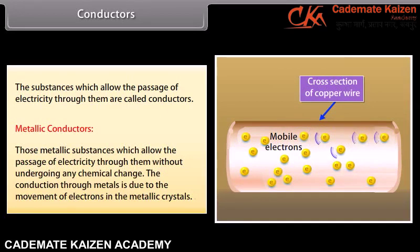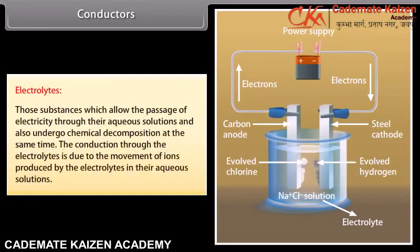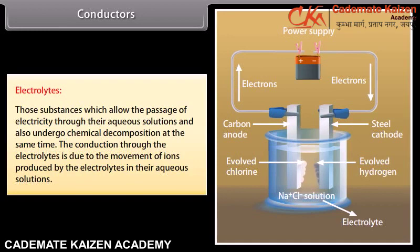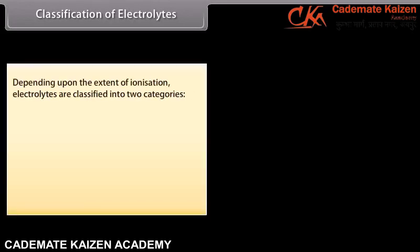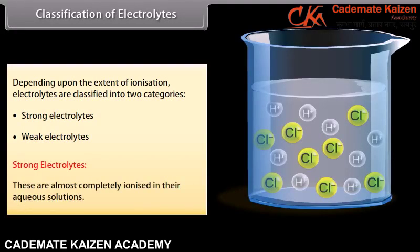Electrochemical cell and Gibbs energy: The reversible work done by a galvanic cell equals the decrease in its Gibbs energy. If the EMF of the cell is E and nF is the amount of charge passed, then ΔrG = −nFE_cell. If the concentration of all reacting species is unity, E_cell = E°_cell and ΔrG = −nFE°_cell. By calculating E°_cell we can obtain the standard Gibbs energy ΔrG°. The standard Gibbs energy and equilibrium constant are related by: ΔrG° = −RT ln K.